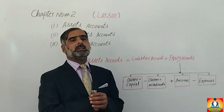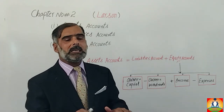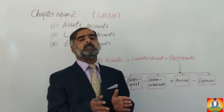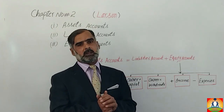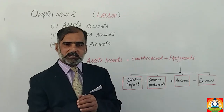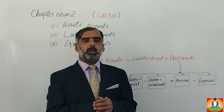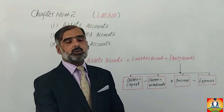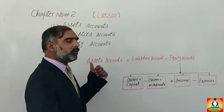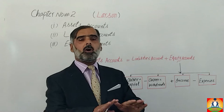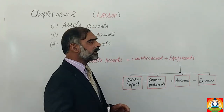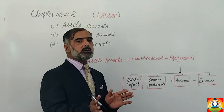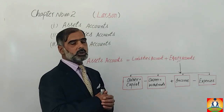We have assets equal to liabilities plus owner's equity. We will read about liabilities plus owner's equity — what are liabilities and what is owner's equity in the business. Liabilities are created when we purchase on a credit basis; the payment is made on a future date. When we purchase on credit, this amount is paid on a future date, and due to this, liabilities are created.